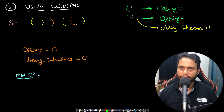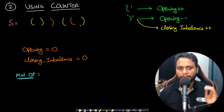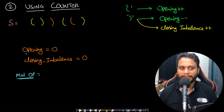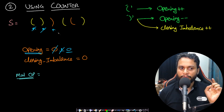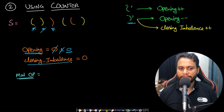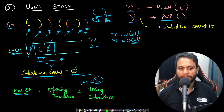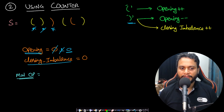Now let's look at a better approach using counters. For a balanced parenthesis string, the count of opening and closing brackets must be equal. We maintain a single 'opening' variable — increment it when we see an opening bracket and decrement it when we see a closing bracket. A zero value means everything is balanced so far. If we see a closing bracket and the opening value is already zero, we increment a closing imbalance counter.